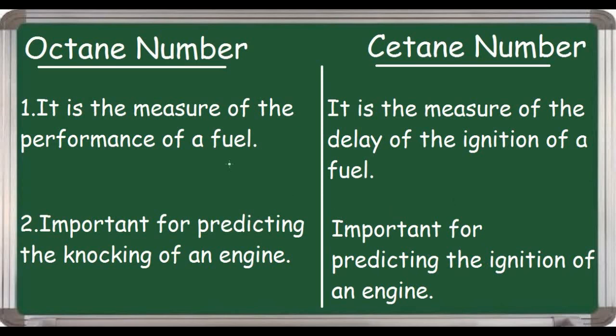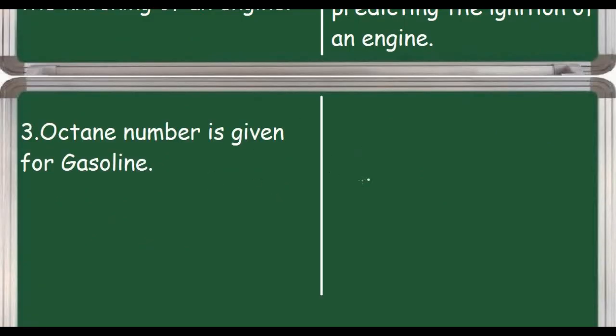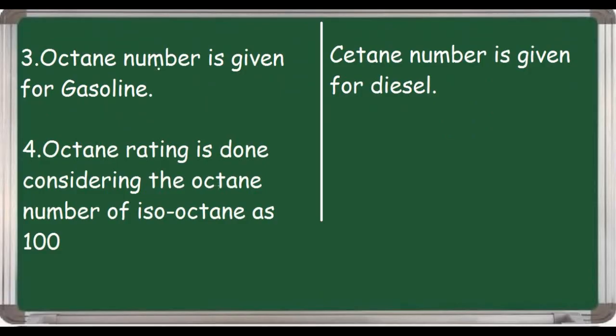Let's move on to the third point. Octane number is given for gasoline, and for cetane number, cetane number is given for diesel.